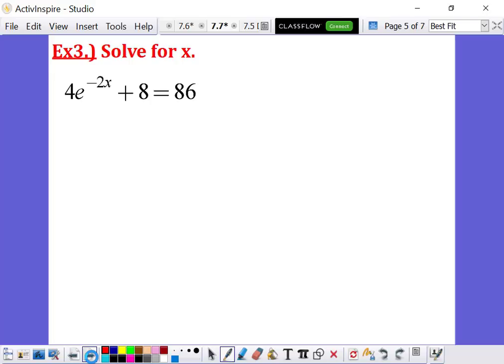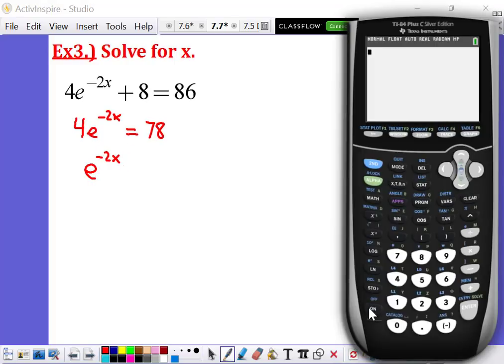Okay, so here's another problem, solve for X. We have 4E to the negative 2X plus 8 equals 86. So the first thing we're going to do is we're going to try to get E to the negative 2X all by itself. So first step, we're going to subtract 8 on both sides. So 86 minus 8 gives me 78. Then the next step is I'm going to divide both sides by 4. So I get E to the negative 2X and I'm going to type that in my calculator. 78 divided by 4.